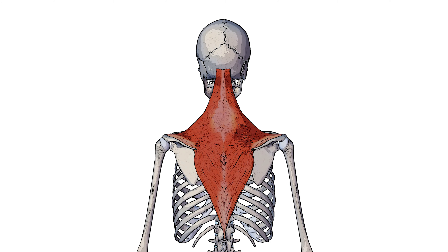Here we can see the trapezius muscle in isolation. As you'll notice it connects to a lot of different places: the scapula, the clavicle, different vertebrae, and the back of the head.